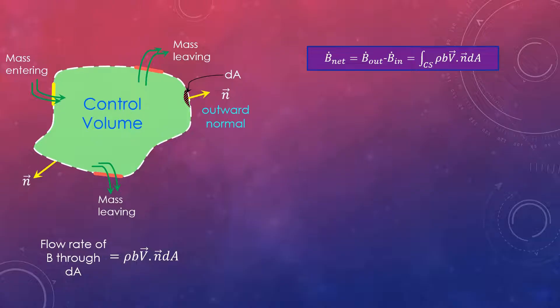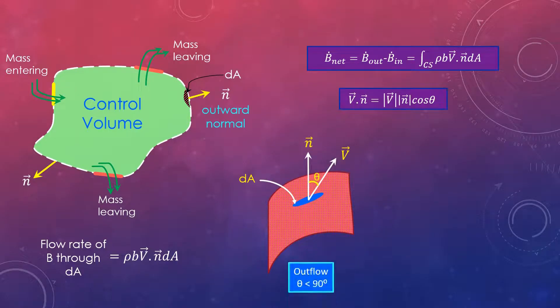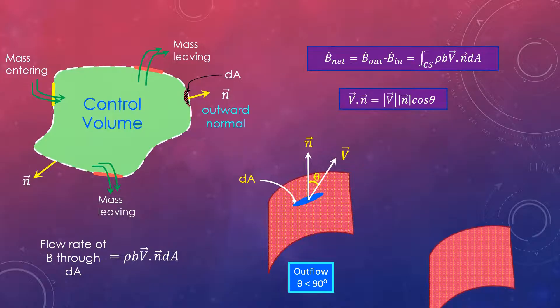An important aspect of this relation is that it automatically subtracts the inflow from the outflow. Let's understand how. The dot product of the velocity vector at a point on the control surface and the outer normal at that point is given as V dot n equals modulus of V times modulus of n times cos theta, where theta is the angle between the velocity vector and the outer normal. For theta less than 90 degrees cos theta is greater than 0 and thus V dot n is greater than 0 for outflow of mass from the control volume. For the second case if theta is greater than 90 degrees then cos theta is less than 0 and thus V dot n is less than 0 for the inflow of mass into the control volume. Therefore, the differential quantity rho*b*V dot n*dA is positive for mass flowing out of the control volume and negative for mass flowing into the control volume. And its integral over the entire control surface gives the rate of net flow of the property B by mass.